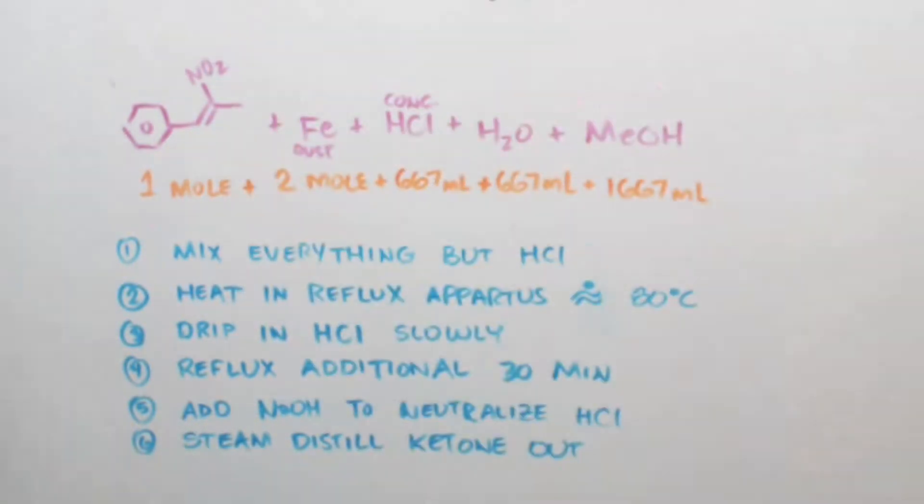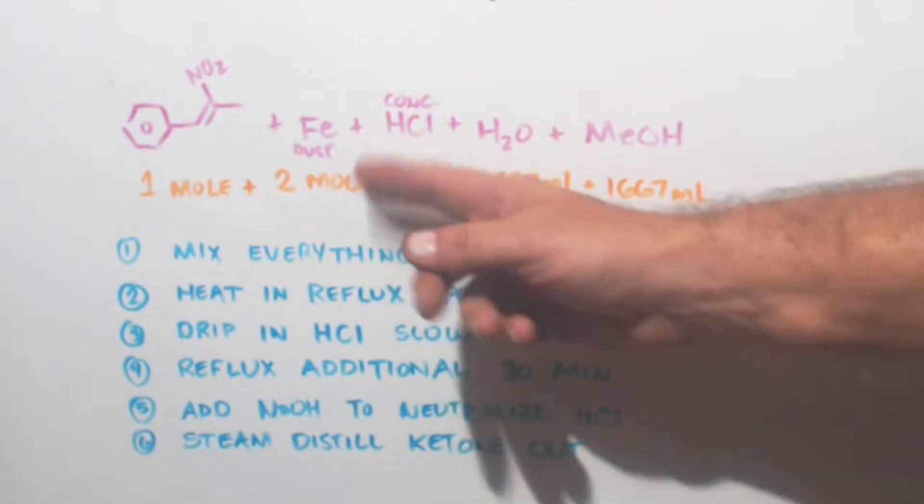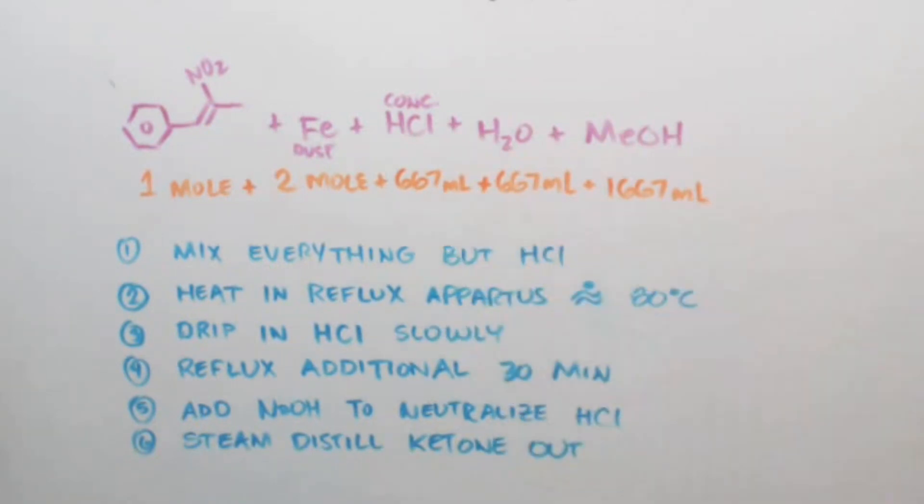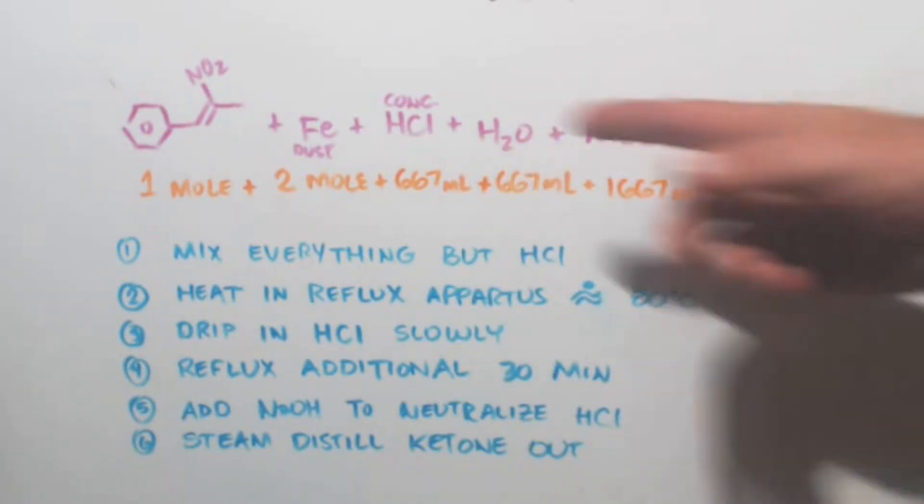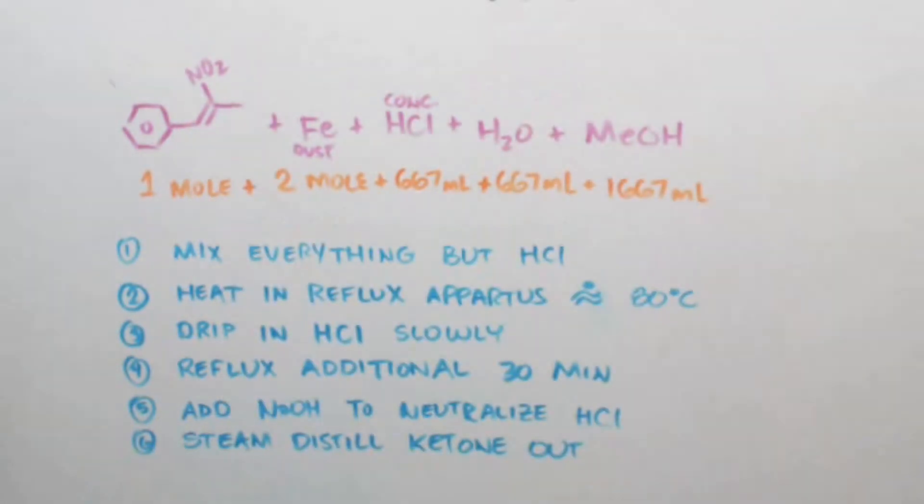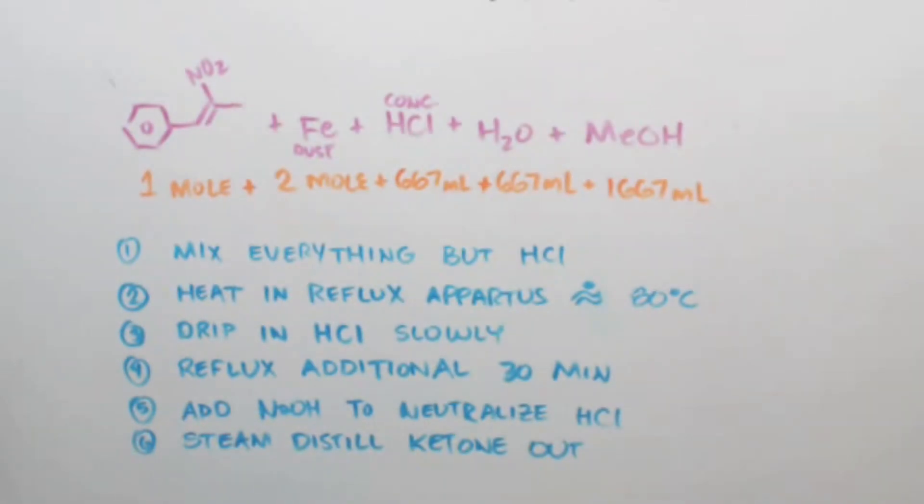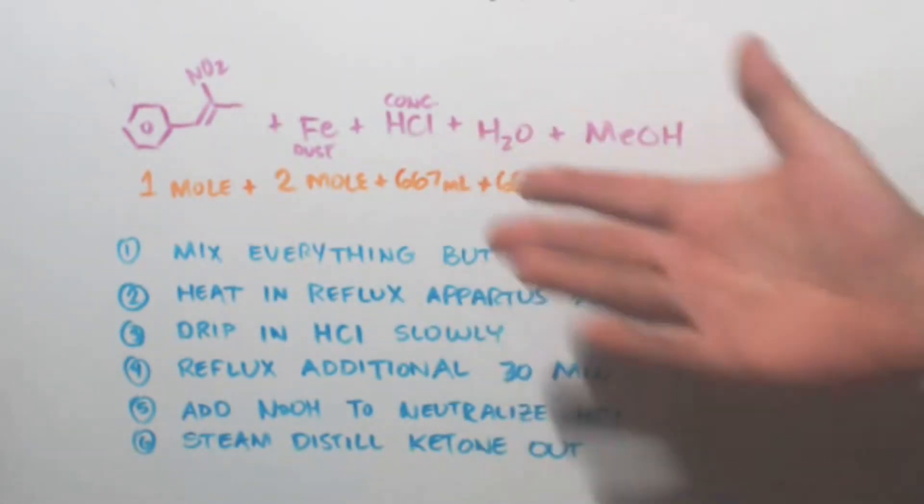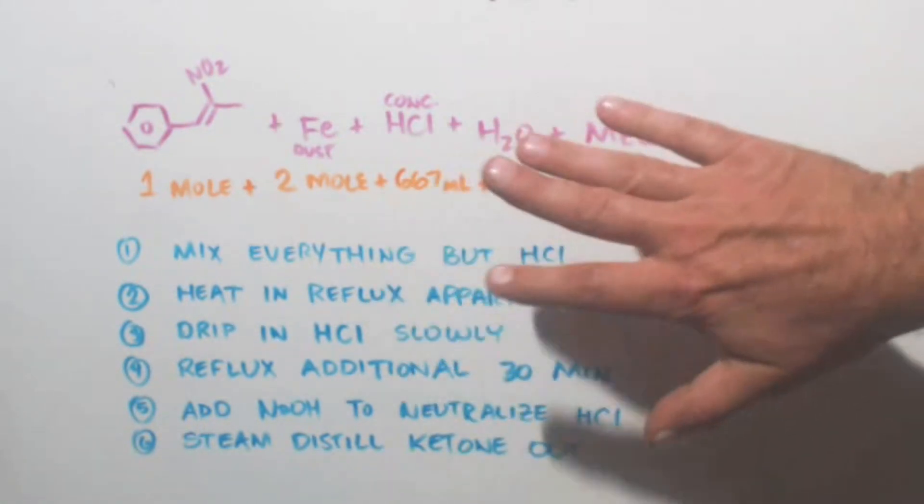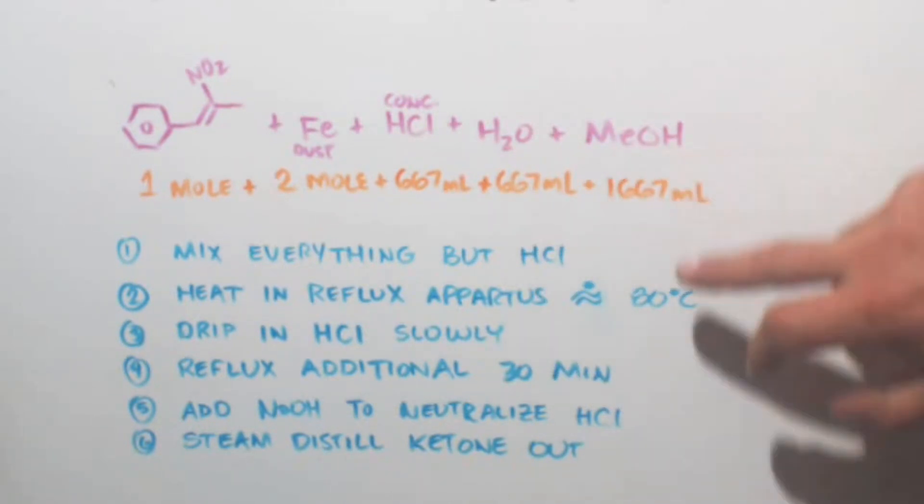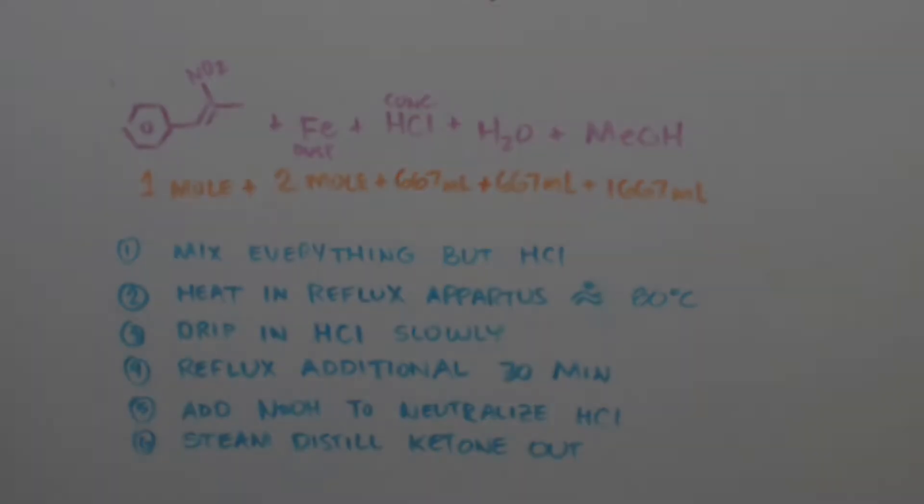One mole of your nitro alkene, two moles of iron. You want it to be dust, not big chunks. Concentrated hydrochloric acid, 667 milliliters for every mole. Now I've heard that's almost seven moles of HCl for two moles of this and one mole of that. It's kind of an overkill. So I've heard of people going as low as 200 milliliters. Two moles here, two moles here, and one mole there. But I think it'll work. But anyways, this is what it says. 667 milliliters. Same for the water. Methanol, 1667 milliliters.